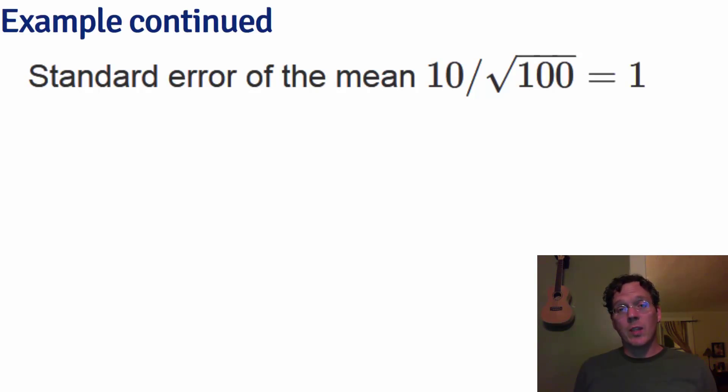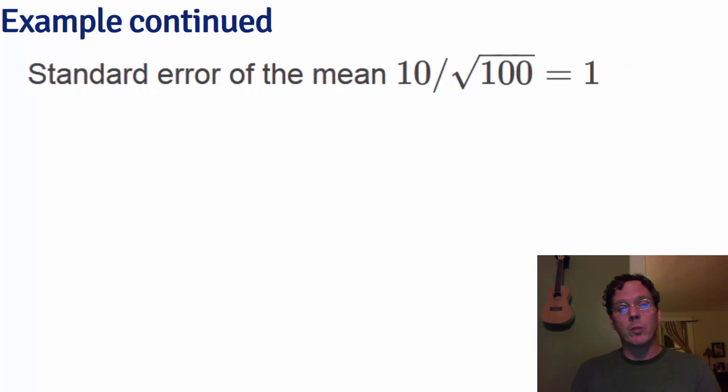The standard error of the mean is 10, the assumed standard deviation of the population, divided by square root 100 as the square root of the sample size. That works out to be 1. Here I just created the setting so it conveniently worked out to be 1.